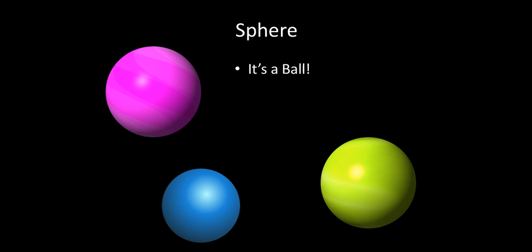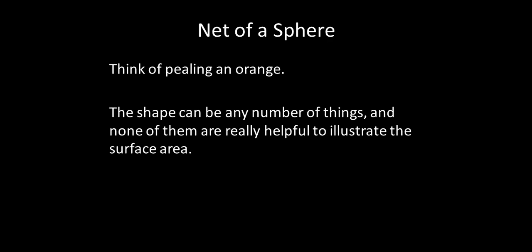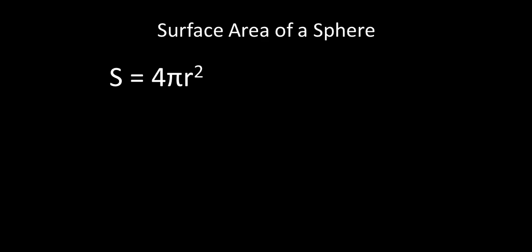So now let's talk about spheres. Spheres are a ball. And the net, remember how we drew that net of the cylinder to try and help us out? The net of a sphere is kind of like peeling an orange. It can be in all sorts of different shapes, but none of them are really helpful to illustrate why we use the equation the way we do. So that makes our life easier because we're just going to go ahead and use the equation and plug in the numbers that we get.